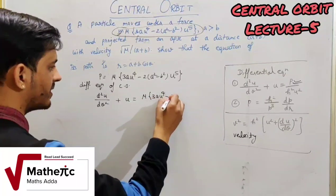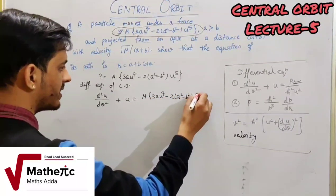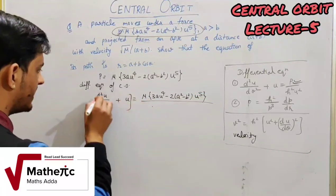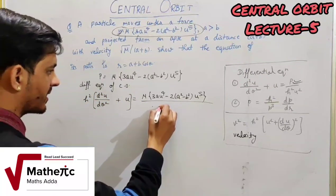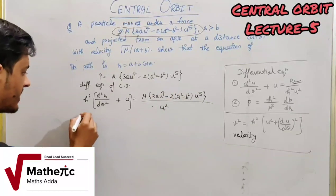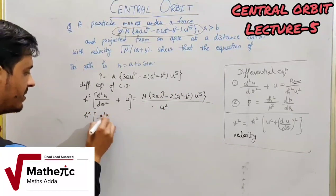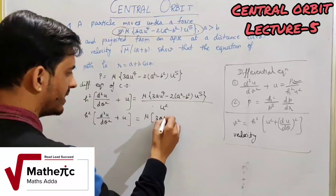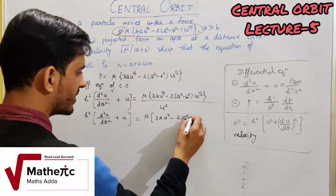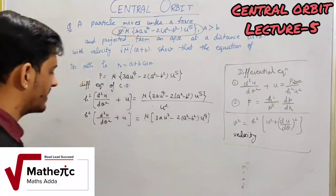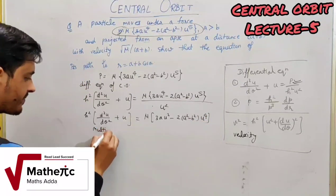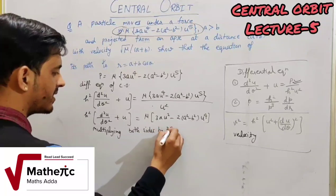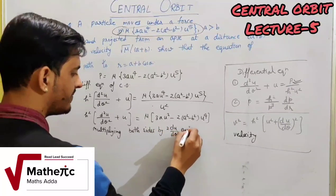Substituting P: d²u/dθ² + u = μ[3a·u² − (2a² − b²)·u⁴] / h². Here h² is cross-multiplied and h² into u² is distributed. So h²·(d²u/dθ²) + u = μ[3a·u² − (2a² − b²)·u⁴]. Now multiplying both sides by 2·du/dθ and integrating.